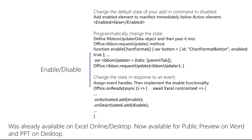You can also programmatically change the state to enable or disable your add-in command. To do that, you first define a ribbon updater data object and then pass it into the office.ribbon.requestUpdate method. You identify the button you want to enable or disable, identify the group and the parent, and add your ribbon updater to the parent tab so you have direct access to that button. When you call the requestUpdate method, it updates the ribbon updater object.